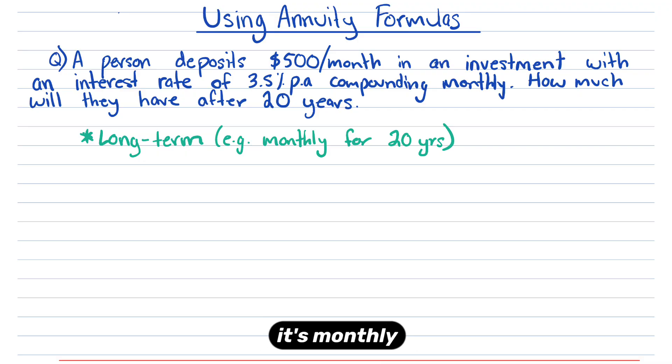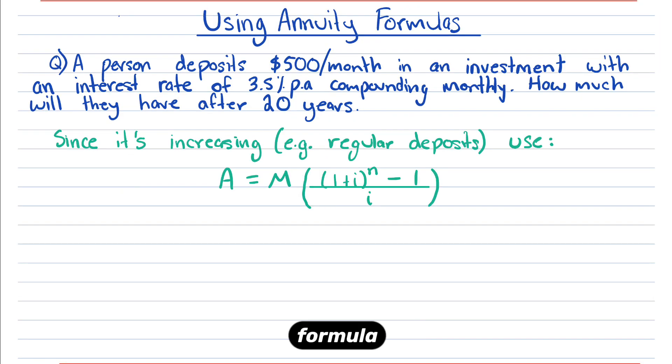Because this is 20 years and it's monthly, this is a long-term investment. Hence, we're going to use one of the annuity formulas and not a recurrence relation. Since it's increasing, meaning there are regular deposits, we're going to use this formula.